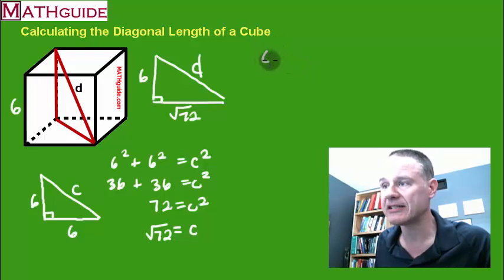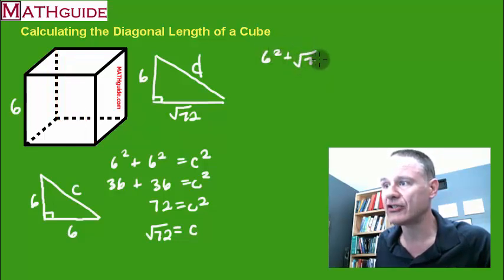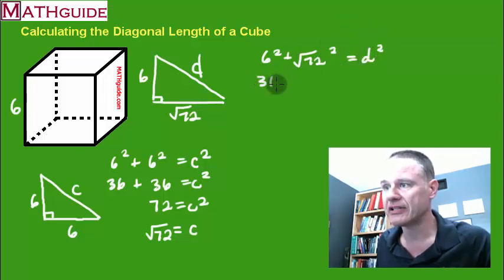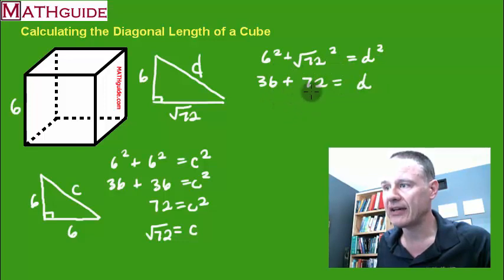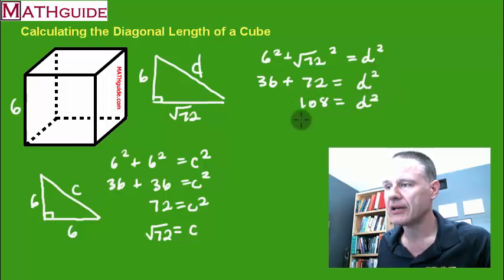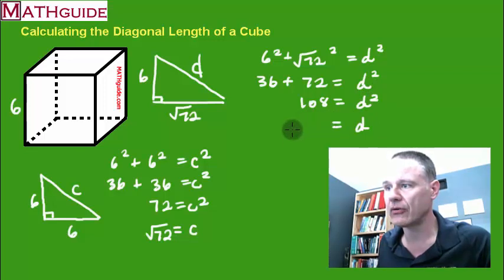Six squared plus the square root of 72 squared equals d squared. That gives us 36 plus 72 equals d squared. Add them together and you get 108. Take the square root of both sides and you get the square root of 108.